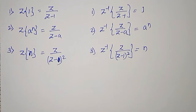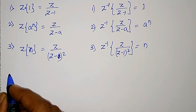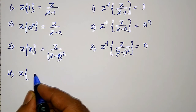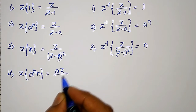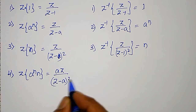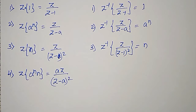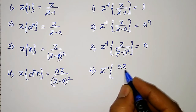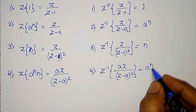Z-transform of A raised to N into N, using the damping rule — which I have proved in one of my Z-transform videos; you can go through the Z-transform playlist for those derivations — Z-transform of A^N into N is AZ divided by (Z minus A) squared. Therefore, inverse Z-transform of AZ/(Z-A)² equals A raised to N into N.